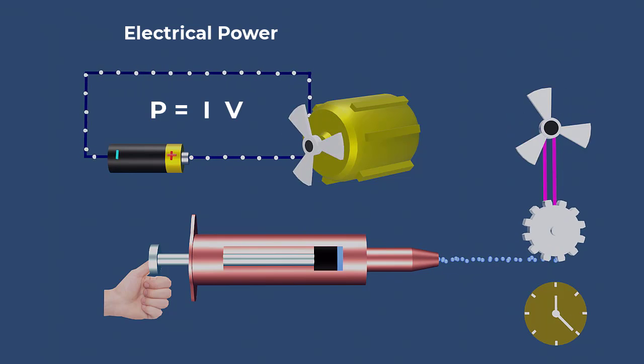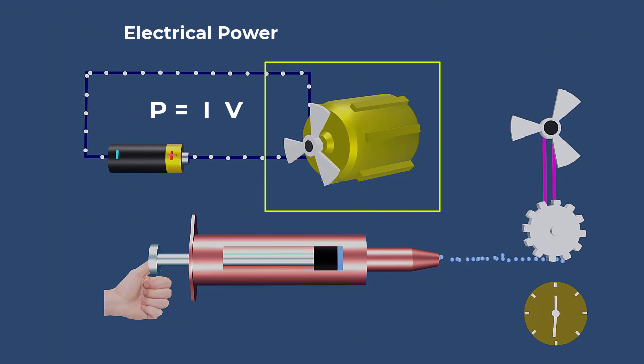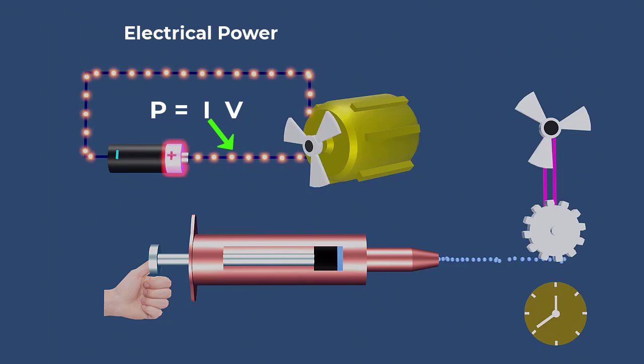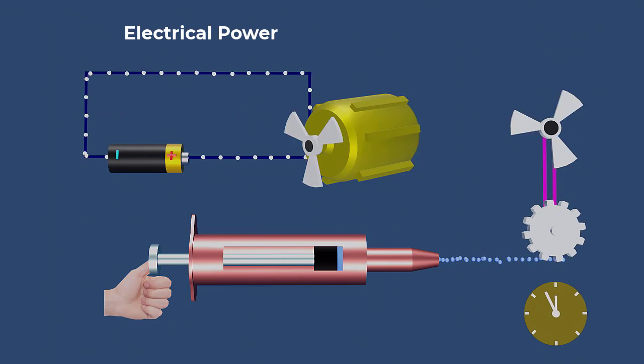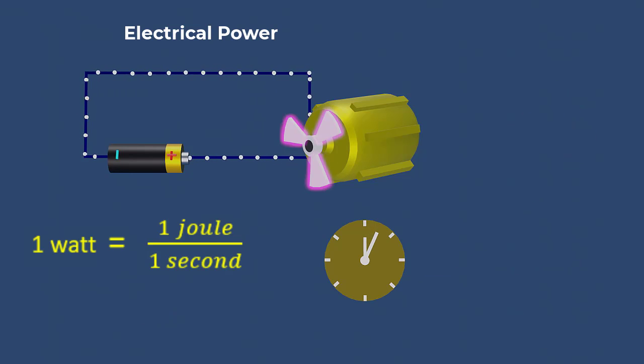Similarly, the power of an electrical device depends on both the applied voltage and the amount of current that flows through it. It is measured in watts. A device that consumes one unit of energy in one second has a power of one watt.